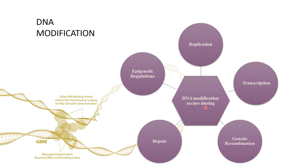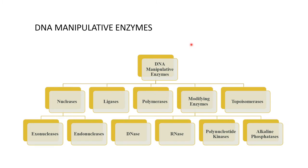DNA modification occurs during replication, transcription, genetic recombination, repair, or in epigenetic regulation. DNA manipulative enzymes are further divided into five types: nucleases, ligases, polymerases, modifying enzymes, and topoisomerase. Nucleases are divided into two types: exonucleases and endonucleases. Modifying enzymes are further divided into DNase, RNase, polynucleotide kinase, and alkaline phosphatase.